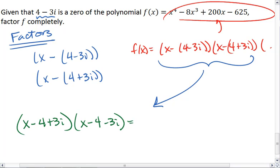To multiply through, we take the first term and distribute it. I get x squared minus 4x minus 3xi.